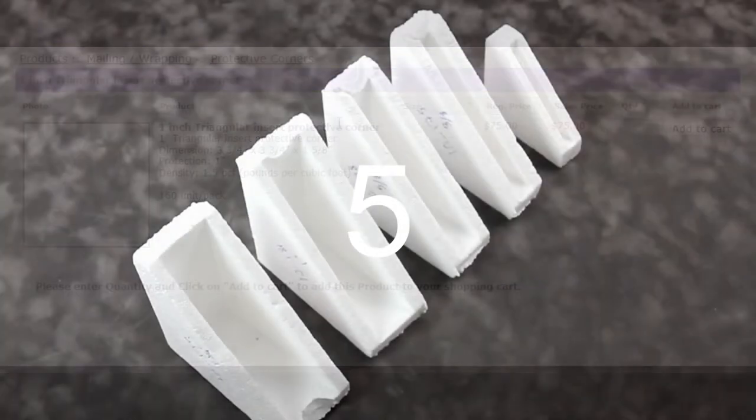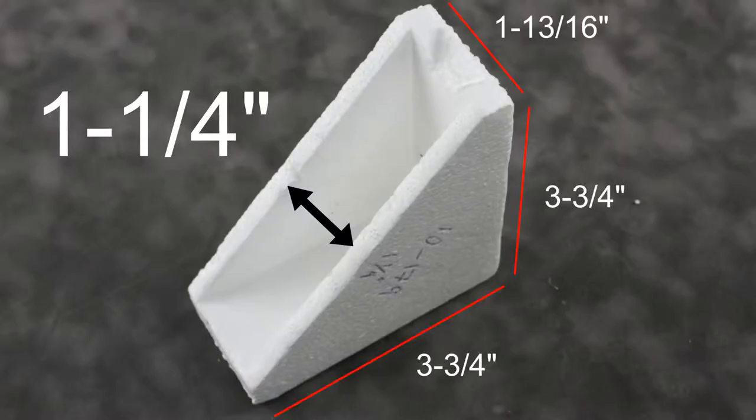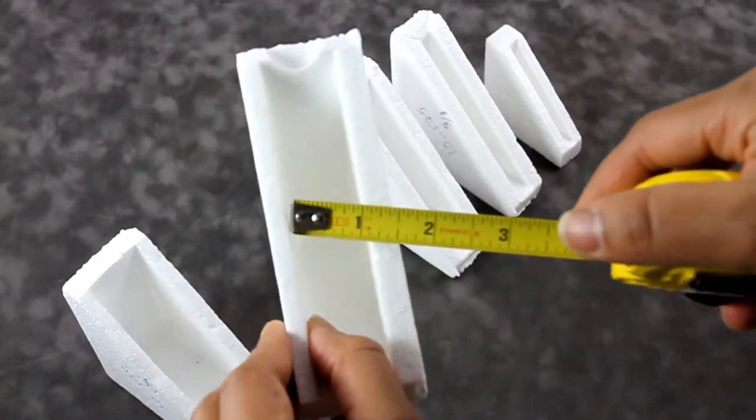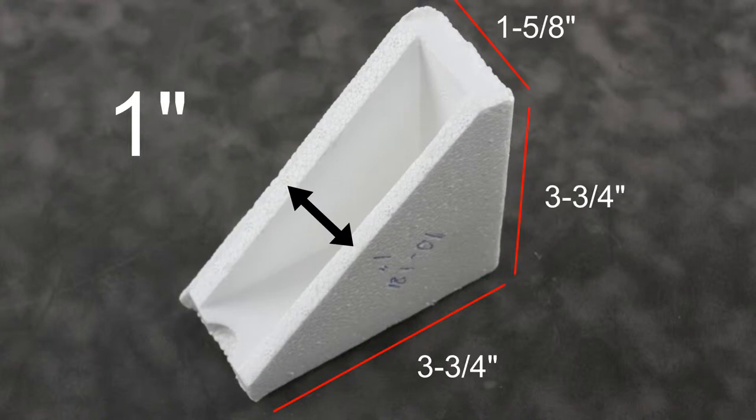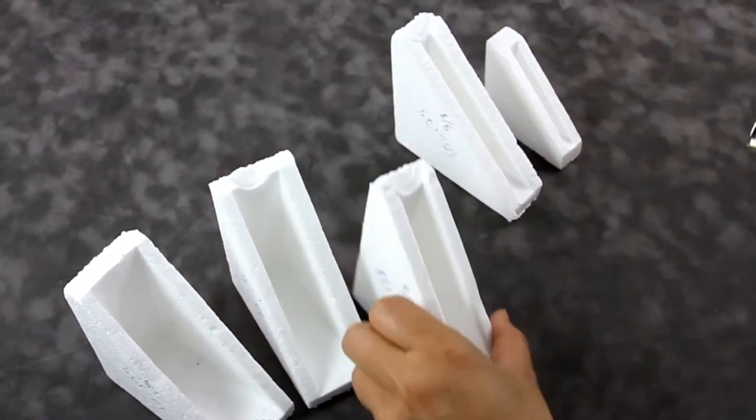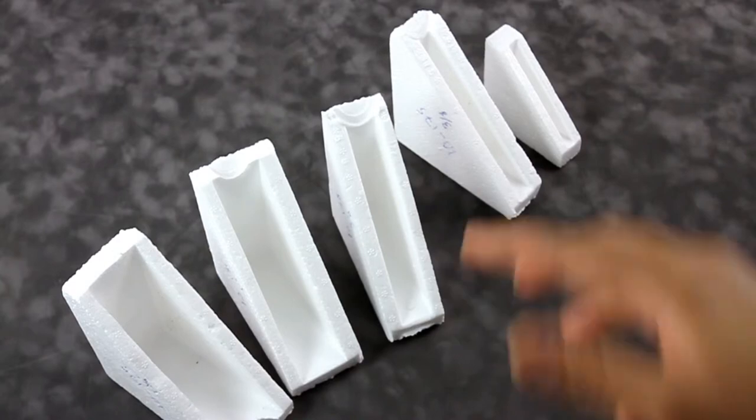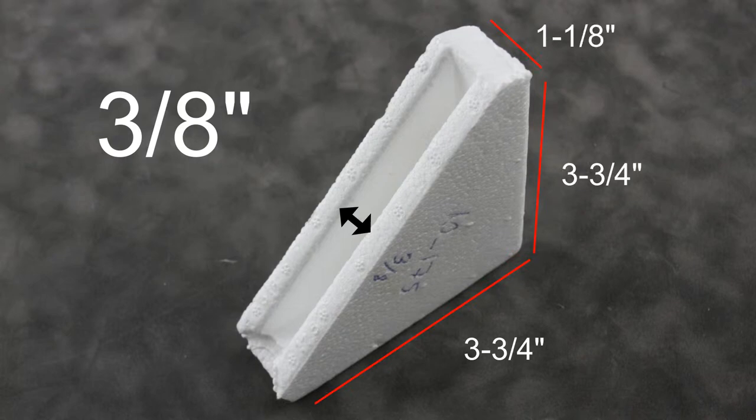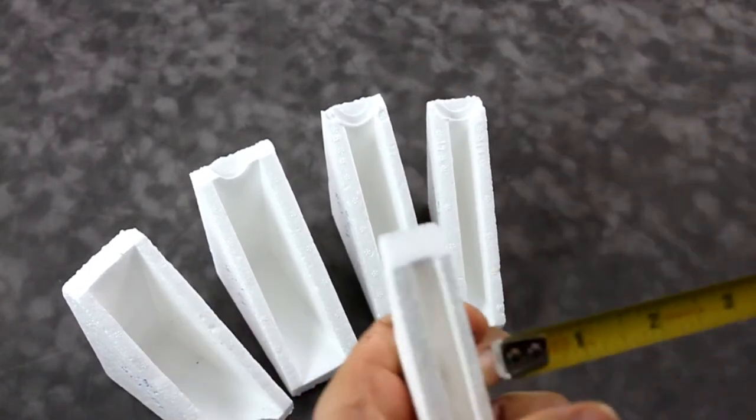Foam protectors are available in five different depths such as one and one-fourth inch, one inch, five-eighths inch, three-eighths inch, and one-fourth inch.